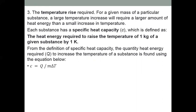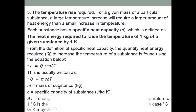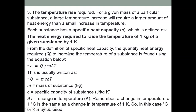To find specific heat capacity, we use the formula: q = mc∆T, where q represents heat energy, m represents mass, and ∆T represents change in temperature. To find heat energy: q = mc∆T. The unit of specific heat capacity is joule per kilogram kelvin (J/kg·K).